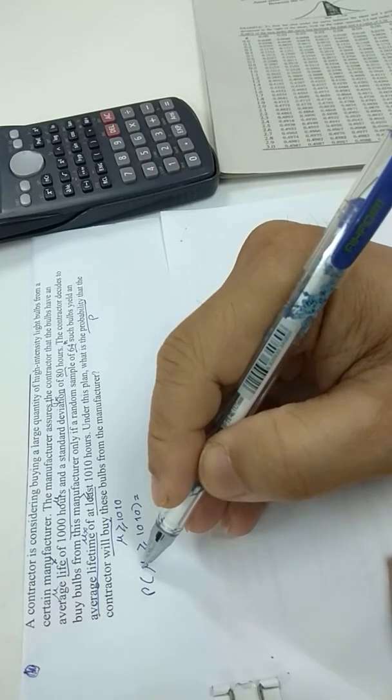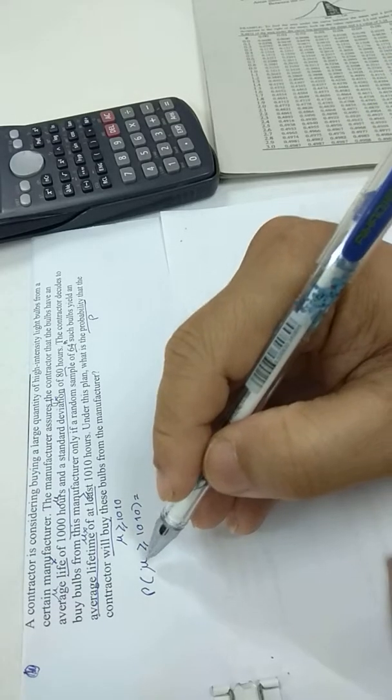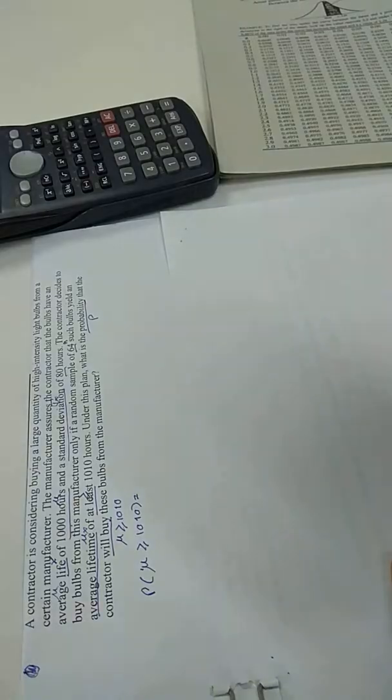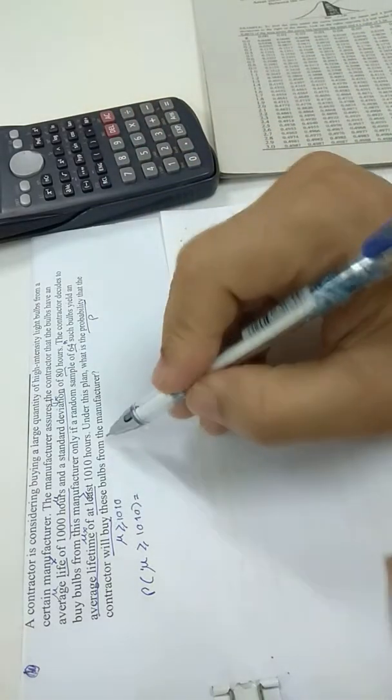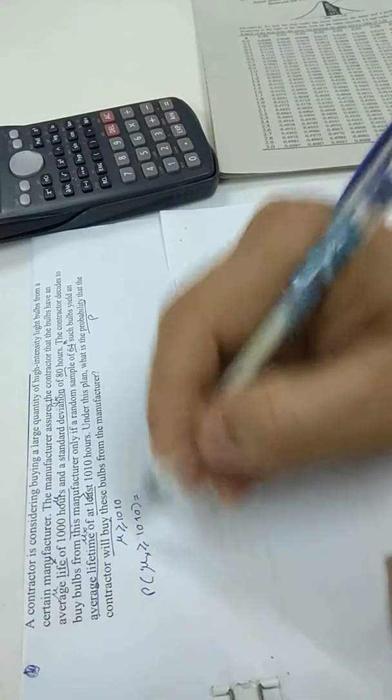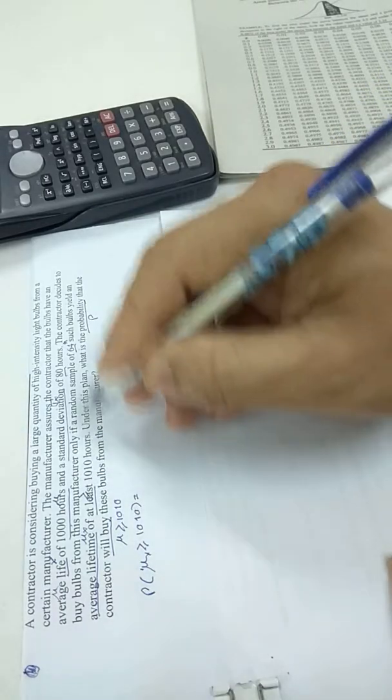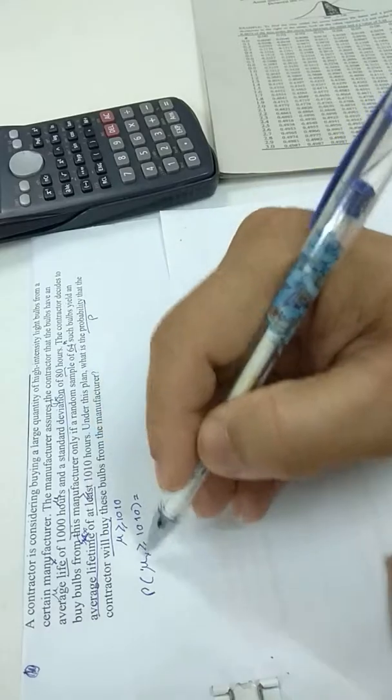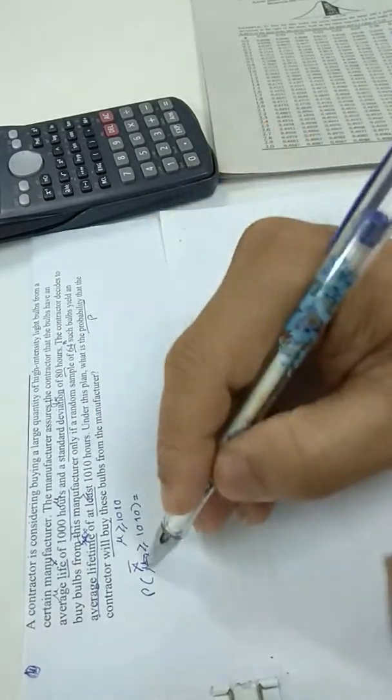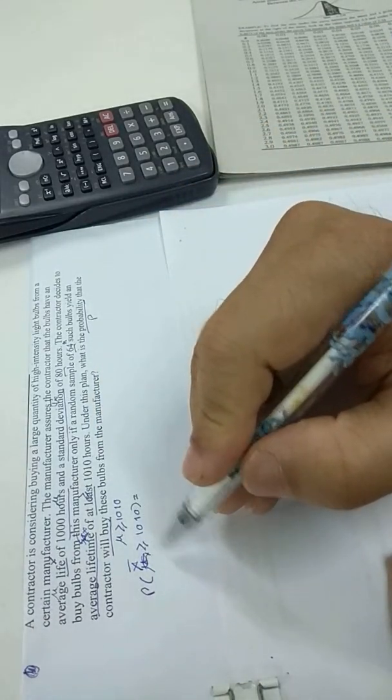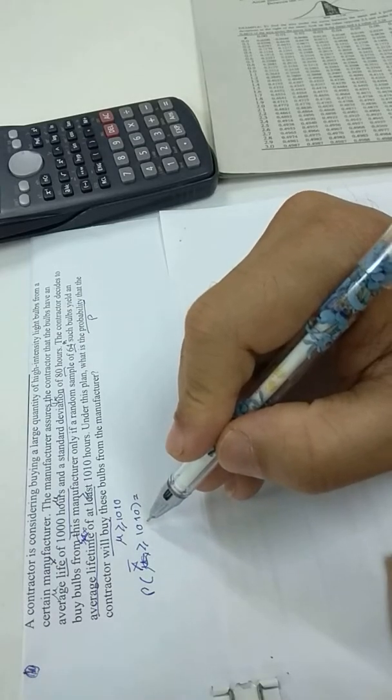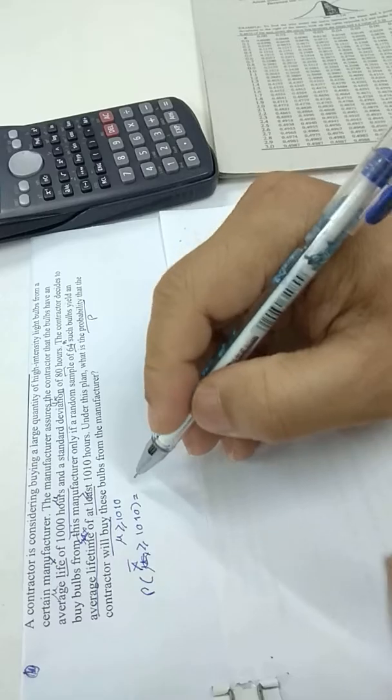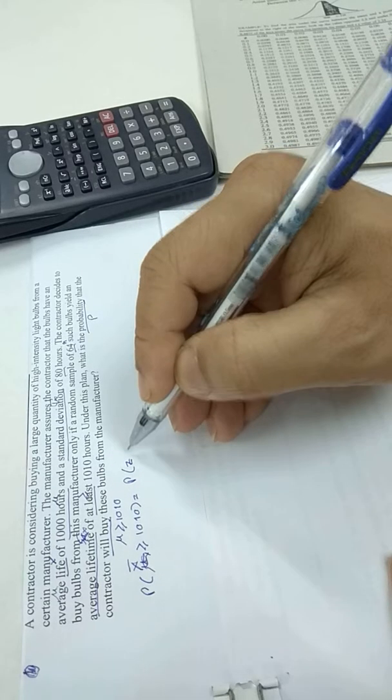Mean of X. The sample mean, this is sample mean X bar. So this will be X bar, the sample mean. If the sample mean is at least 1010 hours he will buy. So what is the probability of this? You change to Z.